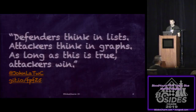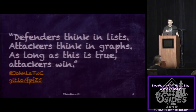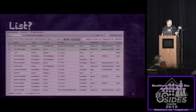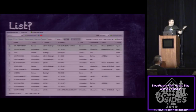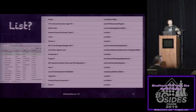BloodHound is one of those tools that can help you shift your perspective and see your network as a graph. When we talk about lists, we mean lists of assets, server names, groups, serial numbers — and then inside those you have more lists about installed software, open ports, compliance checks, vulnerability lists, and so on. All useful things, but limited.